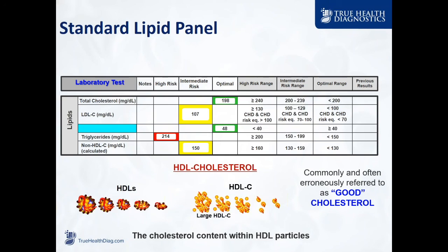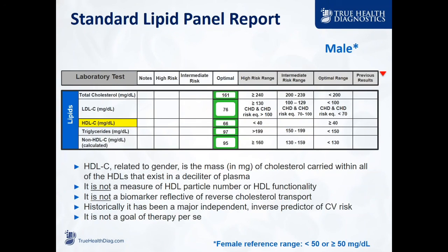This is one of the reasons why HDL cholesterol is no longer a goal of therapy, because it doesn't tell us much about what an HDL is supposed to be doing. When you look at an HDL cholesterol, it is gender dependent — with males having approximately 10 milligrams per deciliter less than females in a given population. It's just a measure of the collective cholesterol content of all your HDL particles. Understand this: HDL cholesterol is not a measure of HDL particle count, no more than LDL cholesterol is a measure of LDL particle count. The two may correlate, but in many people they have no relationship to one another. How would you know that if you're not measuring both?